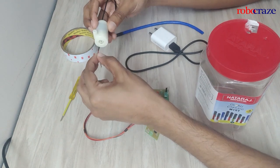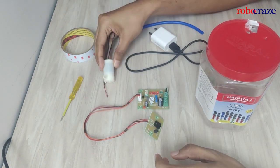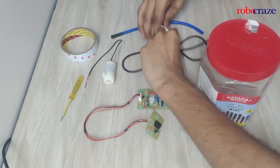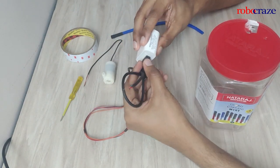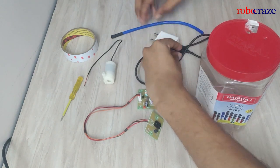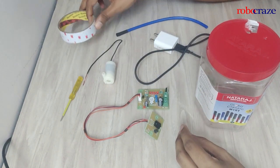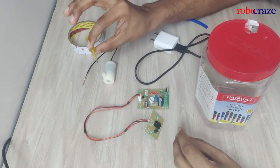a 3 to 5 volt submersible DC pump, a USB cable with a power adapter, any phone power adapter will do, a tubing, double sided tape and a flat head screwdriver.